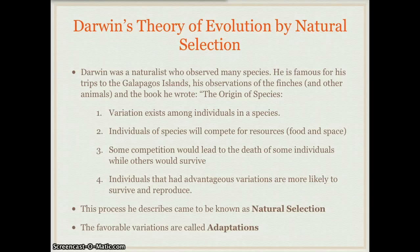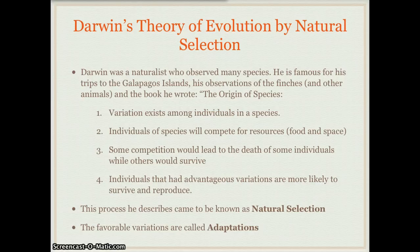The Origin of Species talks about four main points. First, variation exists among individuals in a species — if you think about the human species, you can see there's tons of variation between you and the person sitting next to you or someone across the world. Second, individuals will compete for resources, food and space. Third, this competition could lead to the death of some individuals while others survive — if you're better at competing for food and space, you're going to survive.